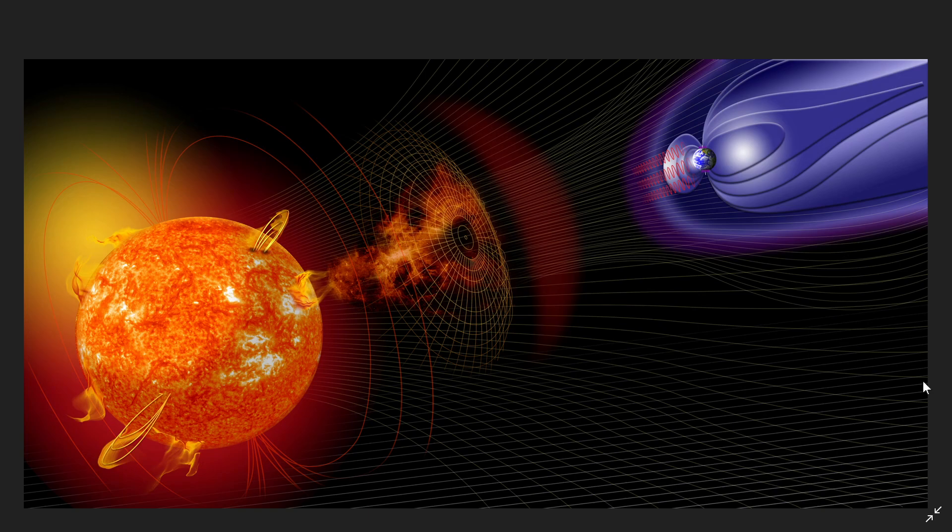We might have a glancing blow by the edge, but in general, it's not as bad because it's not earth directed. But when a sunspot is pretty much centered towards us, that's where things can be quite interesting.